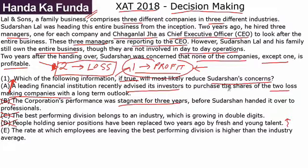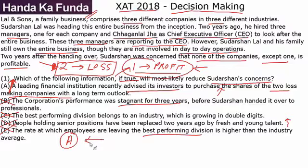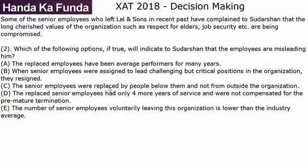Option E: The rate at which employees are leaving the best performing division is higher than the industry average. Anything to do with the best performing division should be ruled out because Sudarshan is worried about the loss-making divisions. The answer has to be A — it is the only option talking about putting faith, money, and investment in the loss-making companies. That is why the answer is A.